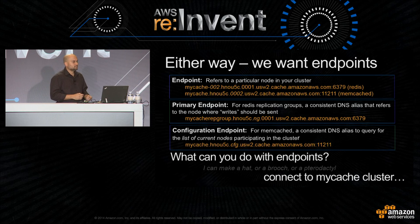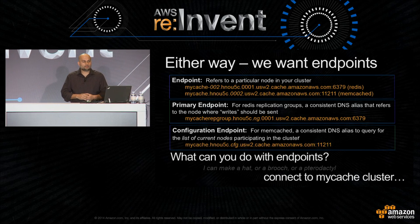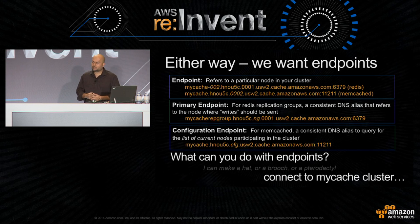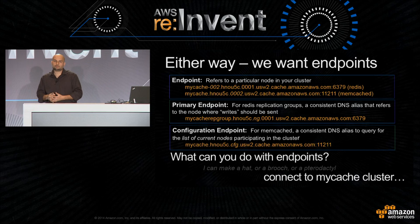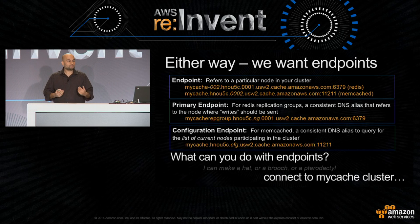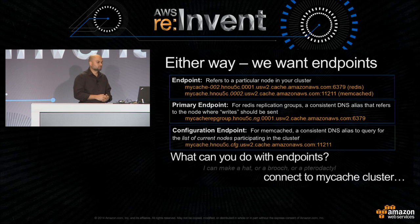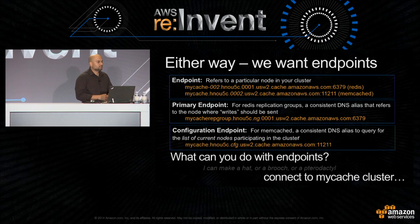The primary endpoint is a consistent name — it's never going to change. In the Memcached scenario, there's a configuration endpoint. The configuration endpoint is a consistent DNS name that you can hit and retrieve a special key that contains essentially the description of your cluster — all the members of your cluster. What do you do with endpoints? The main thing you do is connect to your cluster.